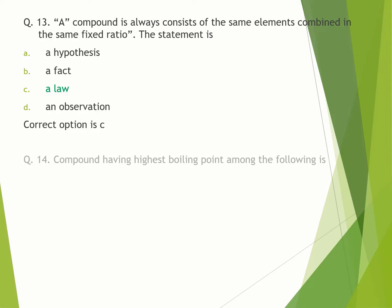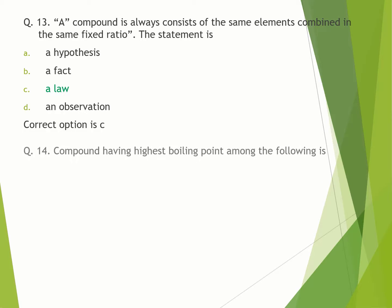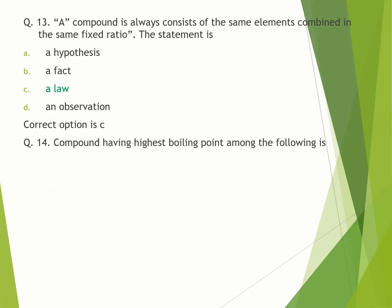Question number 14. Compound having highest boiling point among the following is: A. HF. B. HCl. C. HBr. D. HI. Correct option is D.